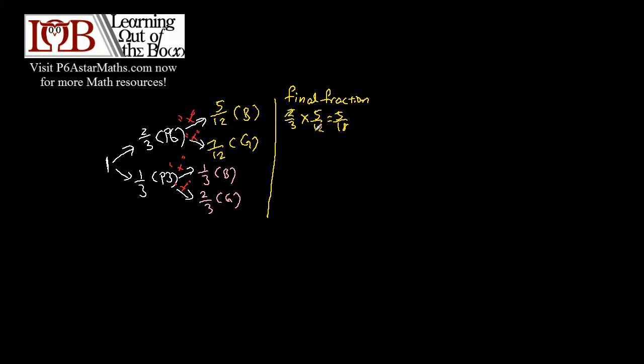After you have done some simple cancellation, and for this you have 2/3 times 7/12, which is 7/18.